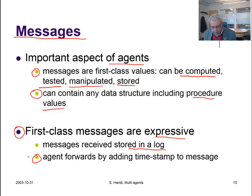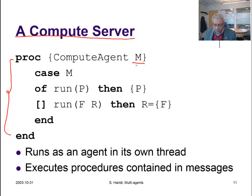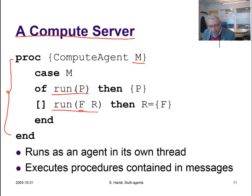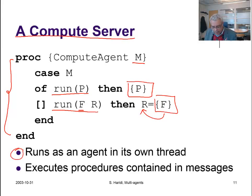Let us look at one example of this: the notion of a compute server. A compute server is an agent — a reactive stateless agent. When it gets a message, the message is actually a procedure, a zero-argument function wrapped in this type of message. When the agent receives a message like this, it will execute what is in the recipe — the procedure. When it receives a function, it will execute it and return the result R, which is bound to a data flow variable. We know that when you put this in a thread, you can create stateless agents, and procedures can be contained in any messages.